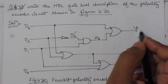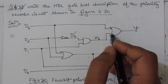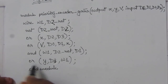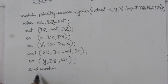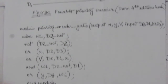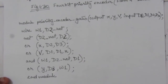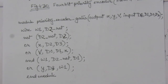For y, which is the OR operation between d3 and w1, we write: or y, d3, w1. Then we write endmodule. This is the Verilog gate level description for the 4-bit priority encoder with d3 as the highest priority. Thank you for watching. If you have any questions, please put them in the comment section below. Also like, share, and subscribe to my channel.